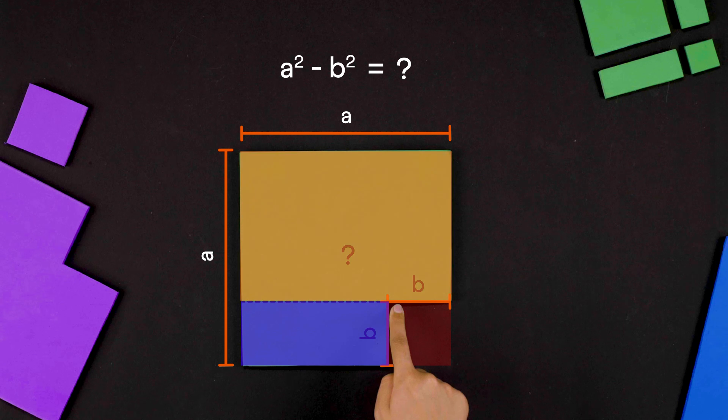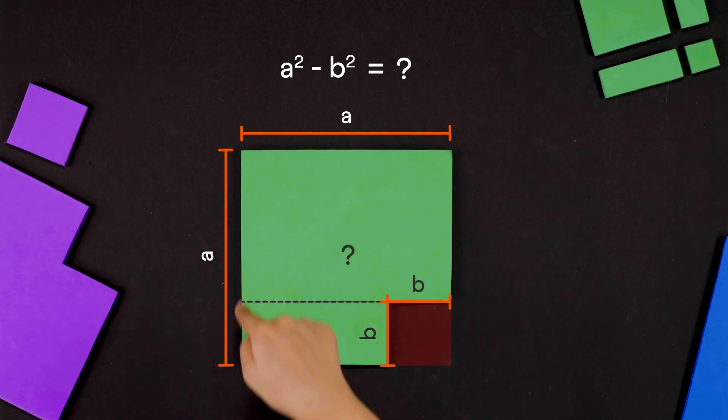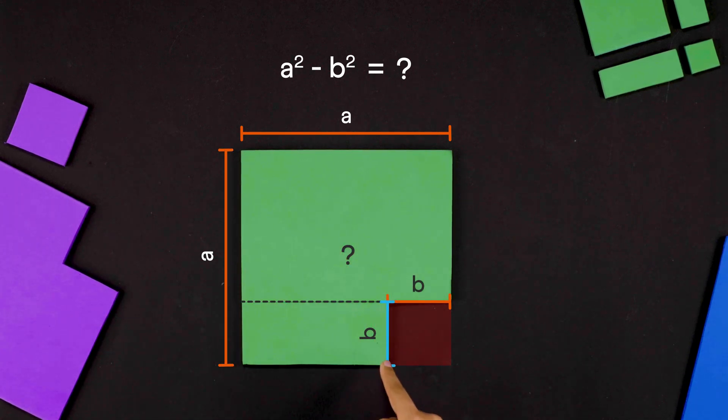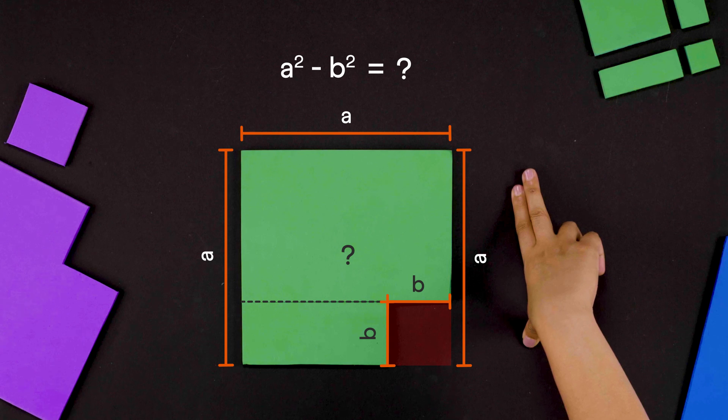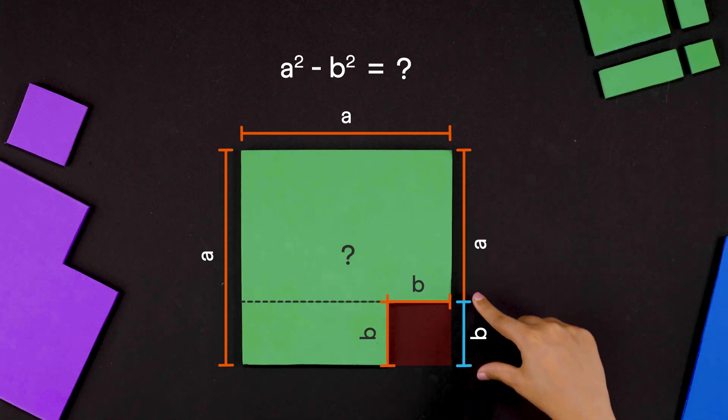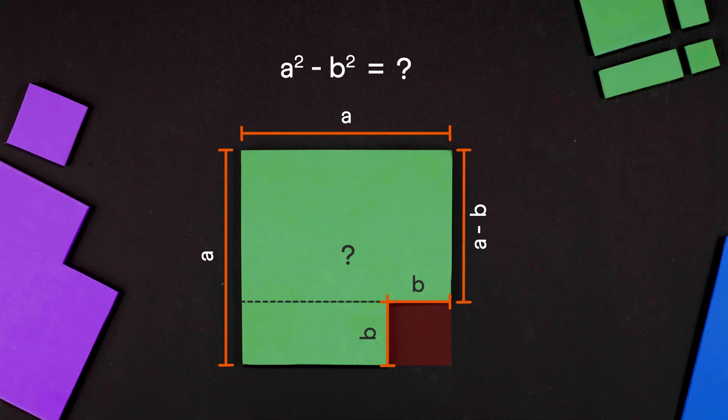Let's break it into rectangles. We know this side is a and this side is b. This total length was a and we subtracted this length b from it. So this side must be a minus b. Similarly, this side must also be a minus b.